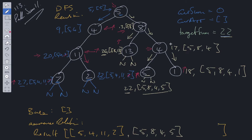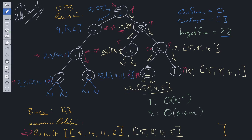We backtrack all the way to the root node where there are no more paths to go down, so we return result. Time complexity is O(N²) where N is the number of nodes in the tree. Space complexity is O(N + M) where N is the stack used throughout the DFS and M is the current array used to store potential path solutions.